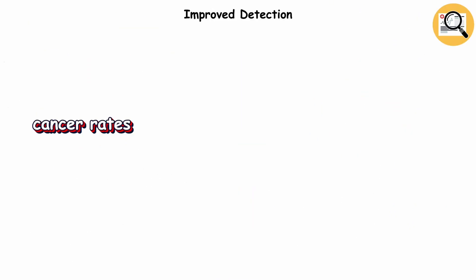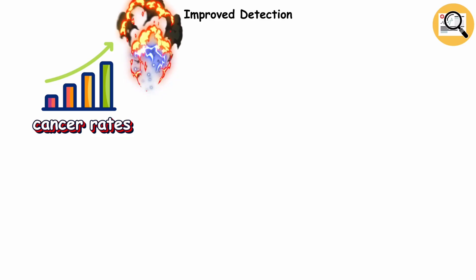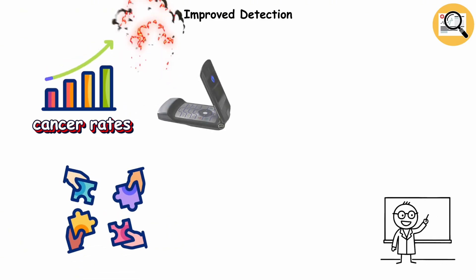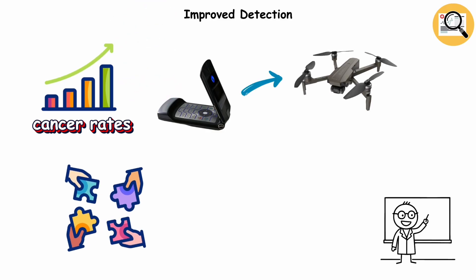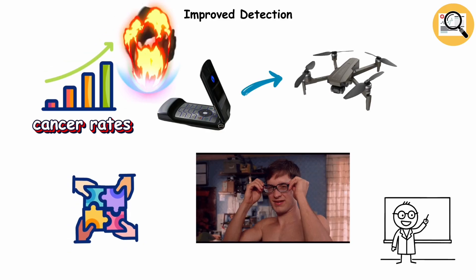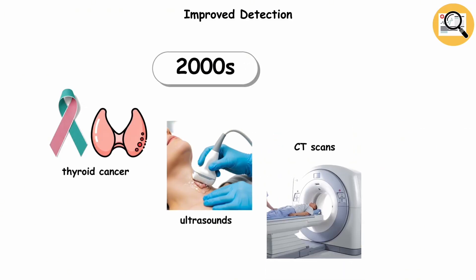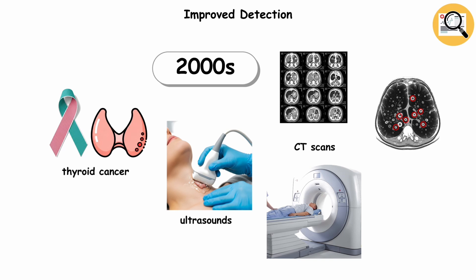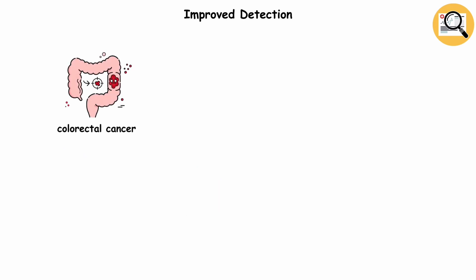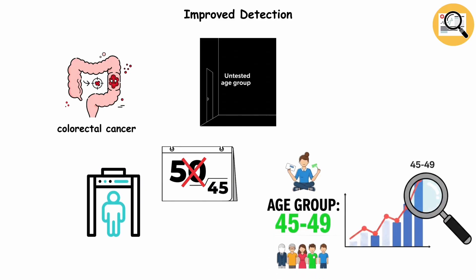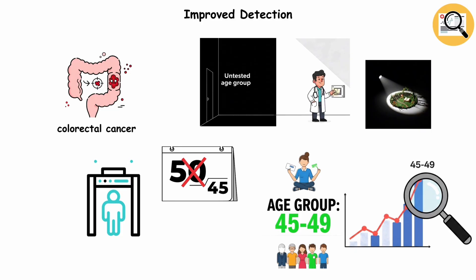Improved detection. Cancer rates in young people look like they're exploding, but part of the story is that we've simply gotten way better at finding it. Think of it like upgrading from an old flip phone camera to a 4K drone. You're suddenly spotting things that were always there but invisible before. Take thyroid cancer. In the 2000s, ultrasounds and CT scans started picking up tiny nodules that older generations never knew they had. Same with colorectal cancer. Once doctors lowered the screening age from 50 to 45, diagnoses in that 45 to 49 age group jumped. Not because the cancer suddenly appeared overnight, but because we finally started looking.